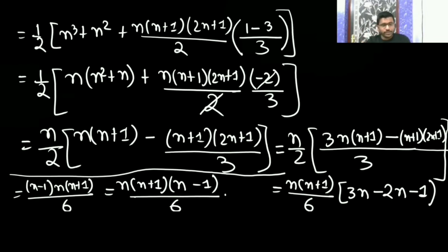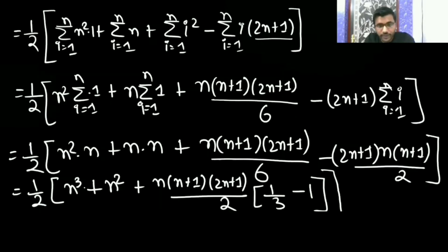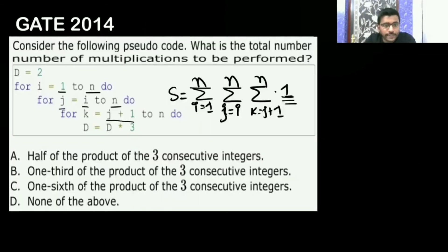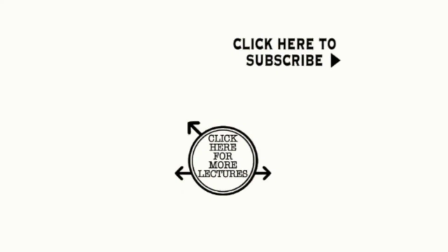Looking at the options, option C is saying 1/6 of the product of 3 consecutive integers — so C is the correct answer.